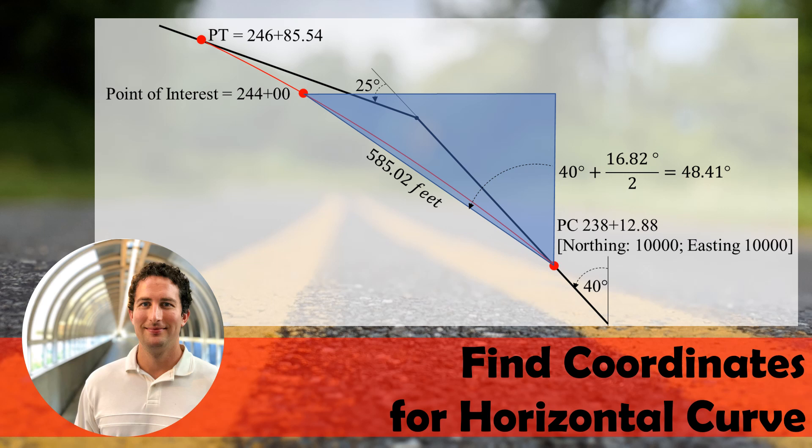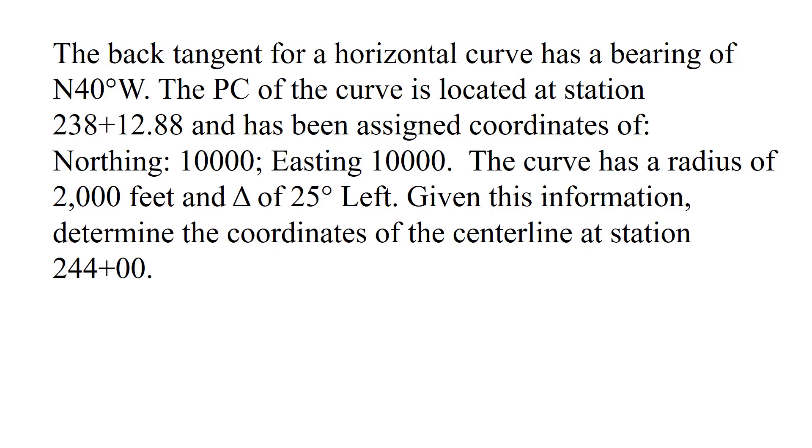In this example problem we're going to find the coordinates for a point along a horizontal curve. Our problem statement tells us the back tangent for a horizontal curve has a bearing of north 40 degrees west.